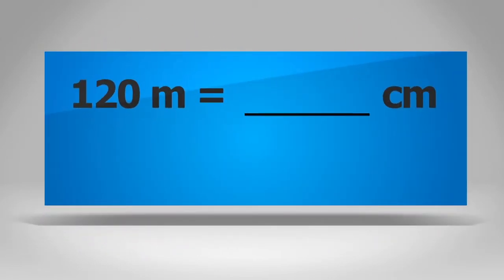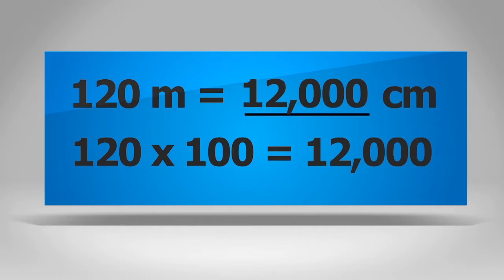Convert 120 meters to centimeters. In this problem, the conversion is from meters to centimeters. Meters are larger than centimeters. When you are converting from big to small, you multiply. There are 100 centimeters in one meter. So you multiply 120 by 100, which equals 12,000 centimeters.